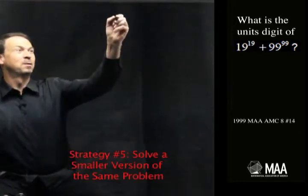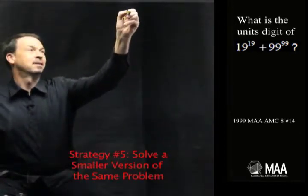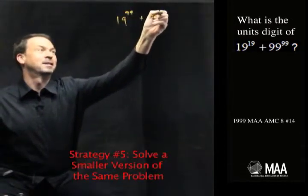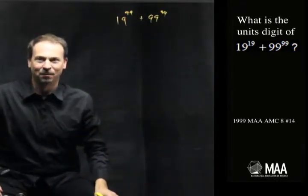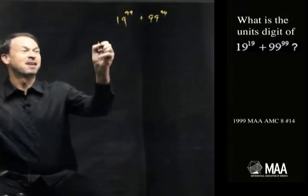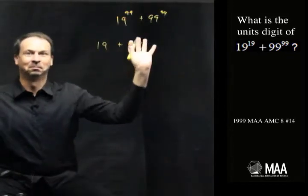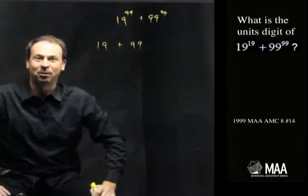And let's just be kind to ourselves. Instead of working with 19 to the 99th power plus 99 to the 99th power, let's just do the simplest smaller version of this problem possible. Well, if I just made it 19 plus 99, no powers, and ask what's the final digit of that?